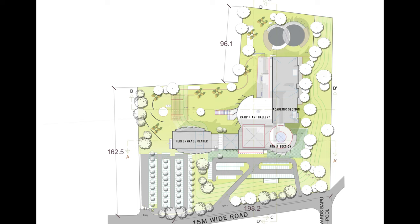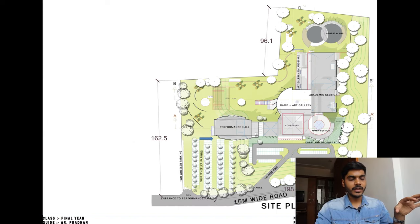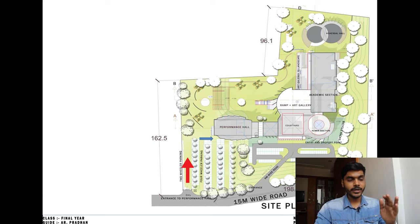Here is the site plan. Some of the basic amenities shown include: entry drop-off point, admin section, academic section, ramp and art gallery, courtyard, performance hall, art gallery, and landscape area, as well as a choral rehearsal hall and multi-purpose rooms. I have two entries — one for the performance hall coming from left to right, and then the entry to the college with an exit as well.